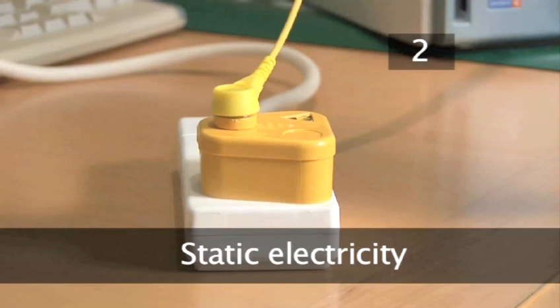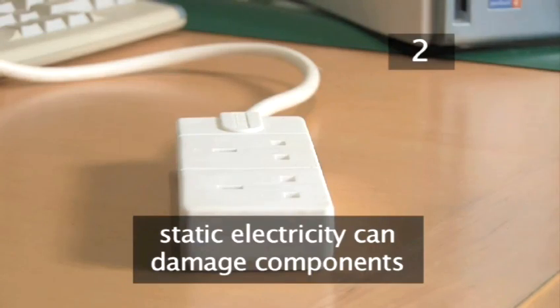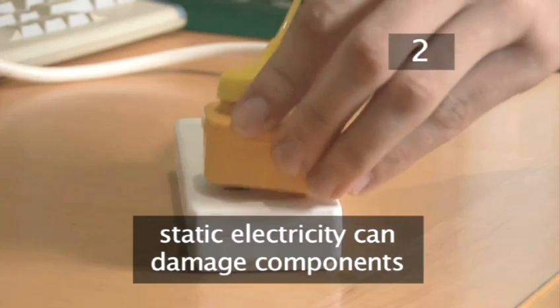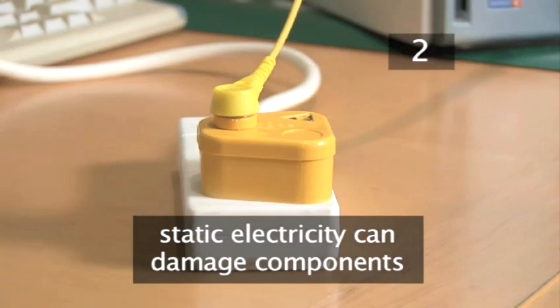When working inside a computer you need to ensure that you have no static charge in your body. That's why we use an anti-static wrist strap grounded to a suitable earth point. We have to do this because static electricity can severely damage components inside the computer.